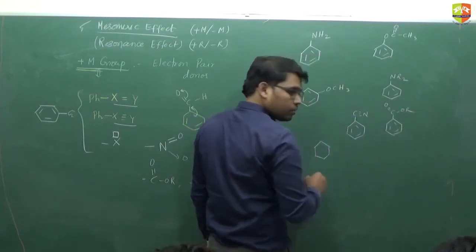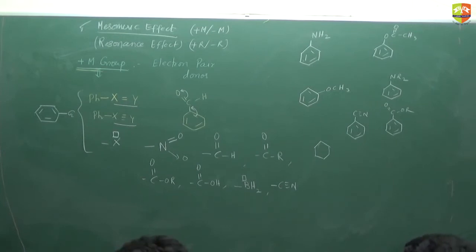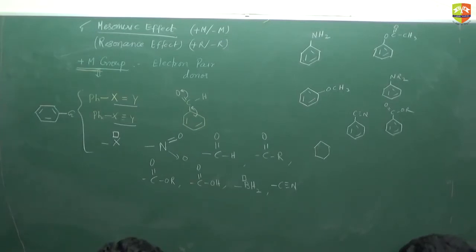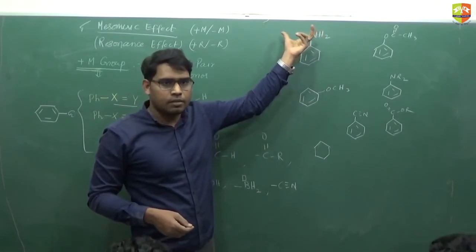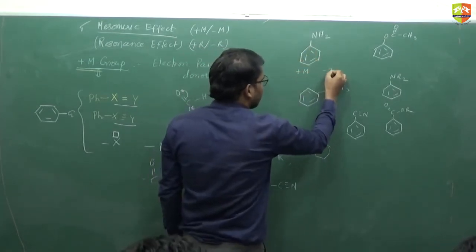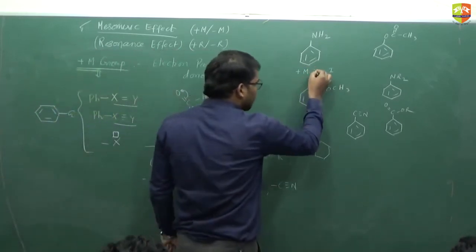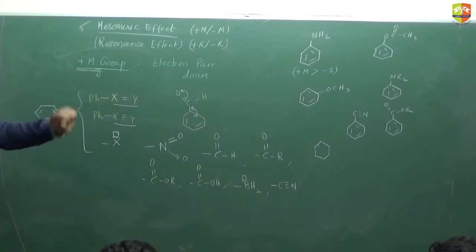A student asks: what do we get by finding out which effect is dominating — plus M or minus I? The instructor explains: when comparing stability or reactivity, you must know which effect is operating. For –NH2: both plus M and minus I are possible (nitrogen is more electronegative than carbon), but plus M dominates. So the overall nature of –NH2 group is electron-releasing (plus M).